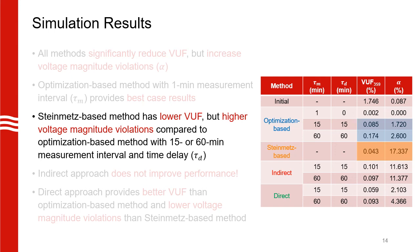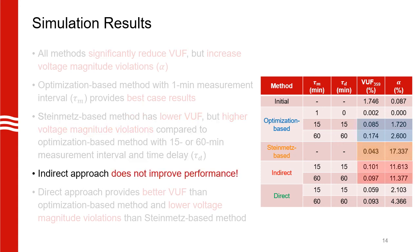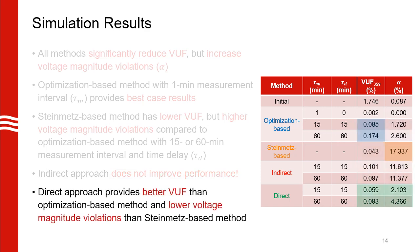Comparing the Steinmetz-based method with the two realistic scenarios for the optimization-based method, the unbalance level of the Steinmetz-based method is much lower, but alpha is very high since the Steinmetz-based method cannot enforce voltage limits. Moving on to the integrated method with indirect implementation, there is no considerable improvement in either voltage unbalance or alpha compared to both the optimization and Steinmetz-based methods. On the other hand, the integrated method with direct implementation shows unbalance values lower than the optimization-based method and voltage violations much lower than the Steinmetz-based method. The main takeaway is that the direct implementation works much better than the indirect implementation.